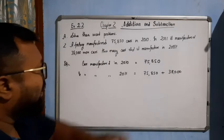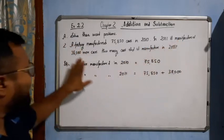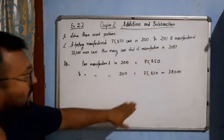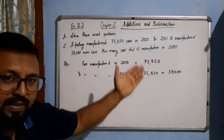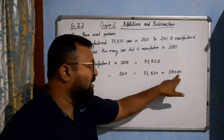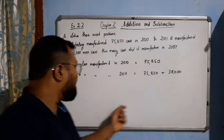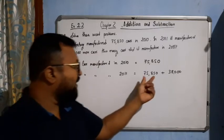Means in 2011 it manufactured 38,000 more cars. Apart from 75,850 they manufactured 38,000 more cars. So this will be the answer. The car in 2011 will be this much.